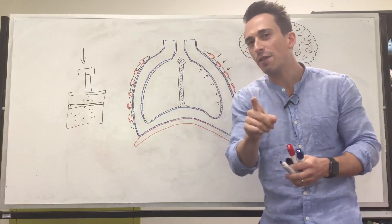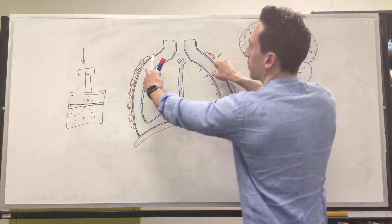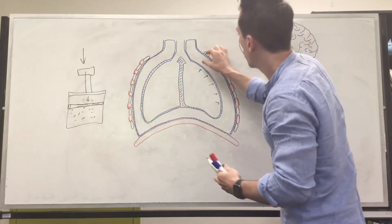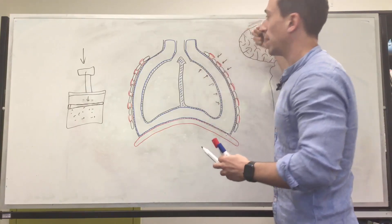And that means if we were to change or move the rib cage, let's say we're to move the rib cage up and out, that's going to move the pleural cavity up and out, which means it's going to move the lungs up and out.